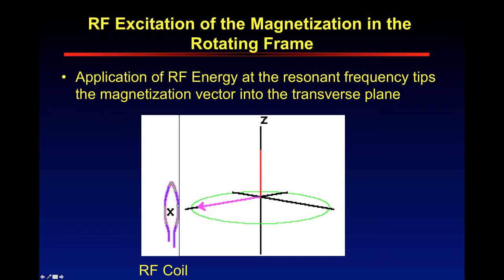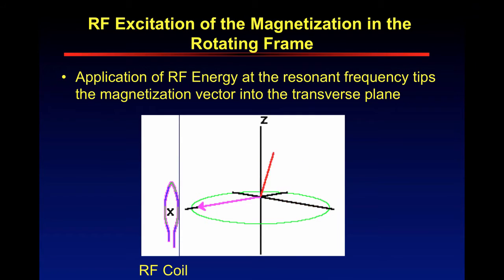Application of the RF energy at the resonance frequency tips the magnetization vector into the transverse plane. What you saw before was the stationary frame, which is synonymous with a carousel looking at it as it's rotating around — you see the horses going up and down but also going around in a circle. To simplify this, people who do MR like to look at this in the rotating frame, as though you are on the horse on the carousel, so all you see is the up-and-down motion, removing that precessing motion. In the rotating frame view, you see that vector has tipped down into the transverse plane.